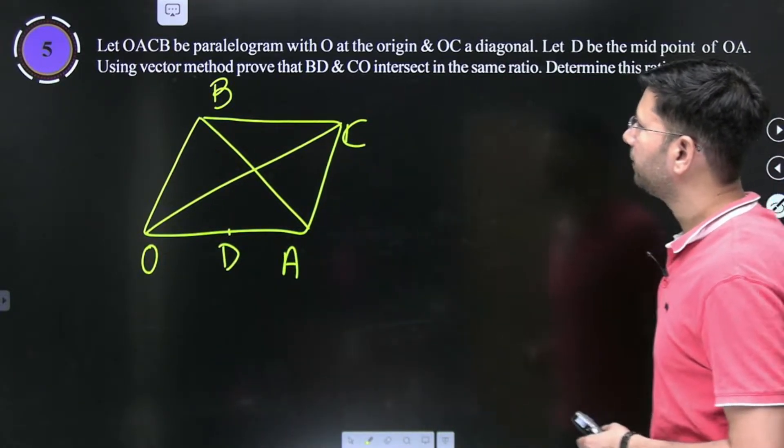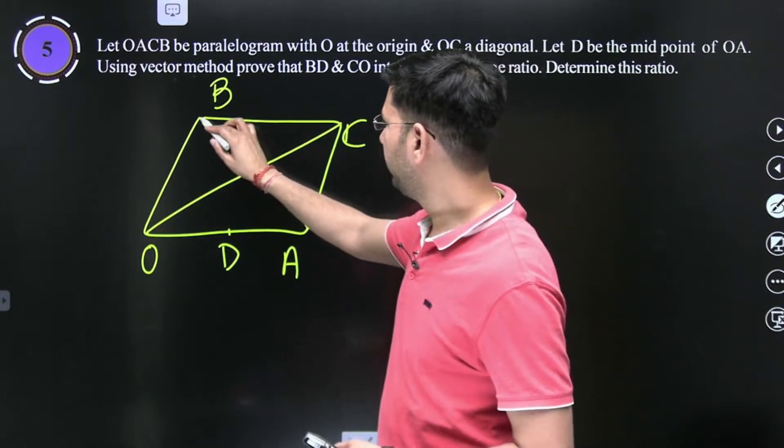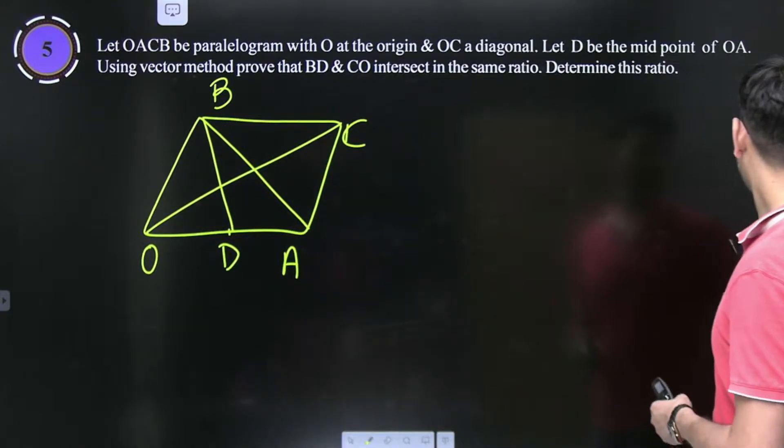Using vector method, prove that BD and CO intersect in the same ratio.